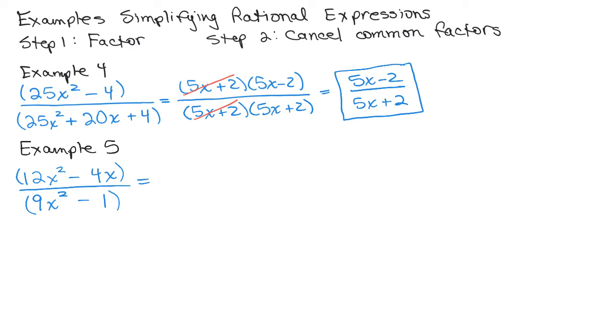Now out of the numerator, again, the first thing you do is look to see if there's a common factor. And in fact, there is a common factor of 4X. So I can factor out a 4X. That would give me a 3X minus 1.